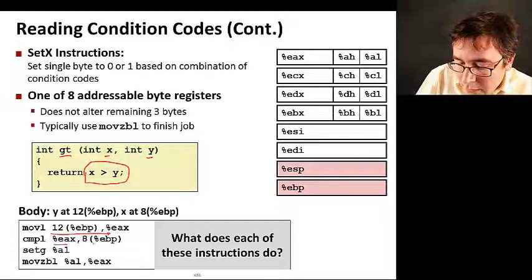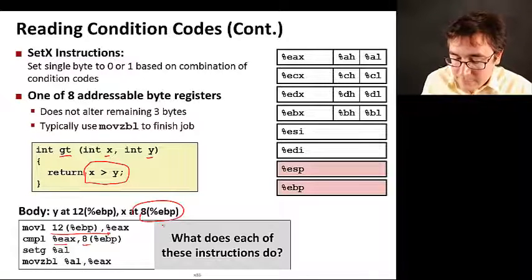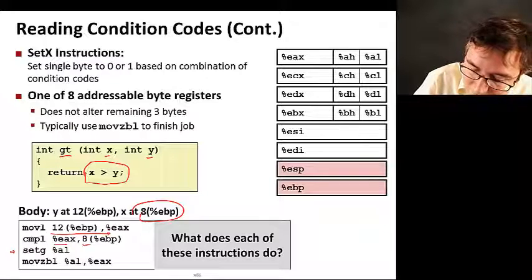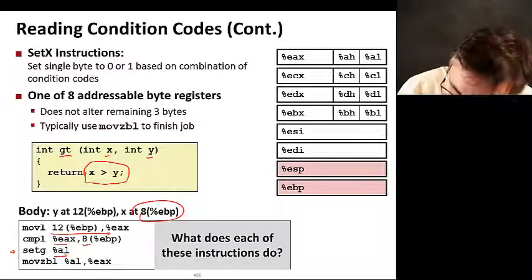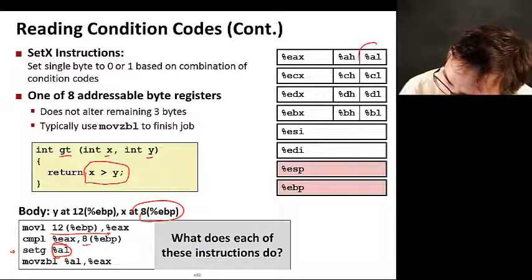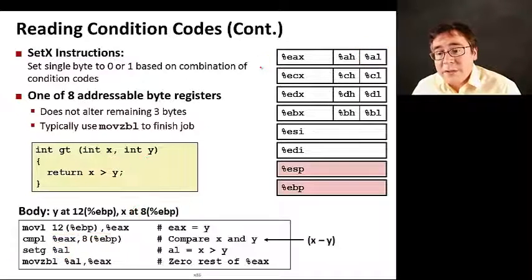Here, what we are doing is getting y and storing it in EAX. Now we are comparing y with x because x is stored in 8 from EBP. And now we are doing set greater and AL. What is set greater doing? Set greater is going to get, and we are passing AL here which is the low order byte of the EAX register.